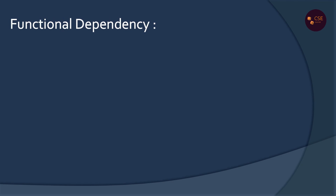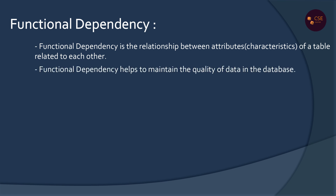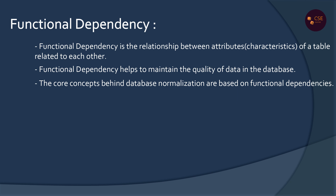Functional Dependency means it is called Functional Dependency. You can find the dependent attributes from the determinant attributes. Functional Dependency is the basis for the normalization process.